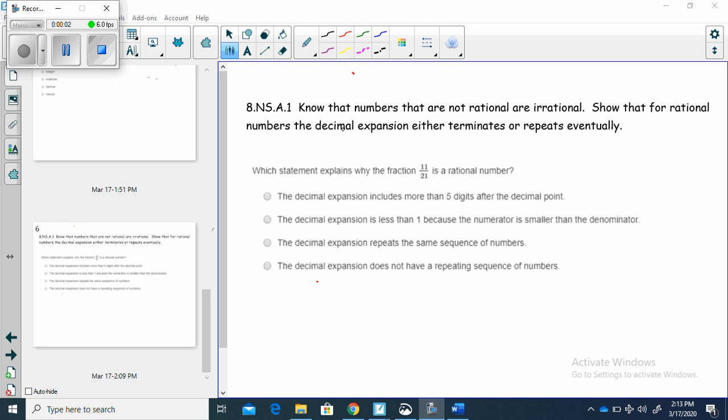We're still talking about number sense, and we're talking about rational or irrational numbers. And as it says, know that numbers that are not rational are irrational. Show that for rational numbers, the decimal expansion either terminates or repeats eventually.